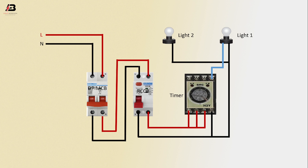Output connection from timer to connect light one. Output connection from timer to connect light two. Now this circuit is ready for use.